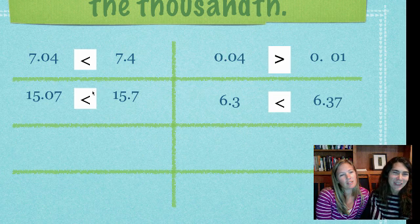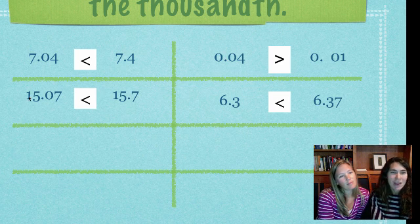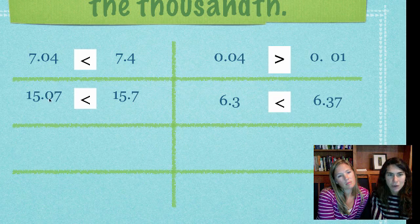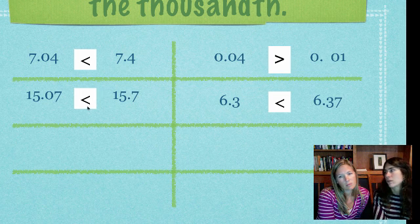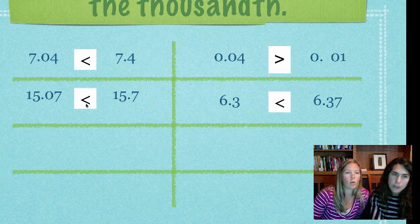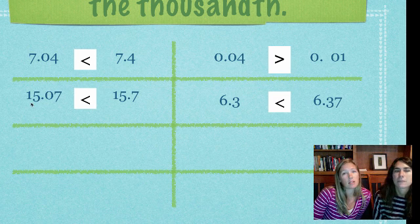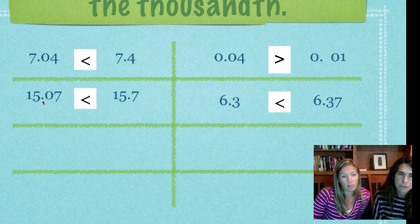So now we're looking at our next problem here. 15 again is similar before the decimal, so I have to look step by step. Now I have a zero after the decimal here compared to a seven, so 15.7 is going to be greater than 15.07.